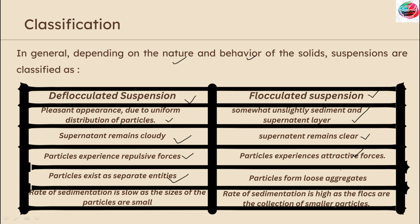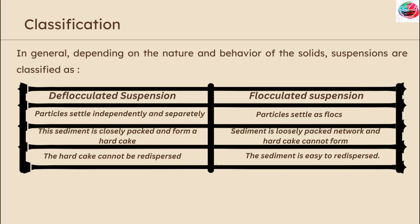In deflocculated suspension, particles exist as separate entities, while in flocculated, particles form loose aggregates. The rate of sedimentation is slow in deflocculated as the size of the particles is small, whereas the rate of sedimentation is high in flocculated as the flocs are collections of smaller particles. Particles settle independently in deflocculated; particles settle as flocs in flocculated. The sediment in deflocculated is closely packed and forms a hard cake, whereas in flocculated the sediment is a loosely packed network and a hard cake cannot form, making it easy to redisperse.